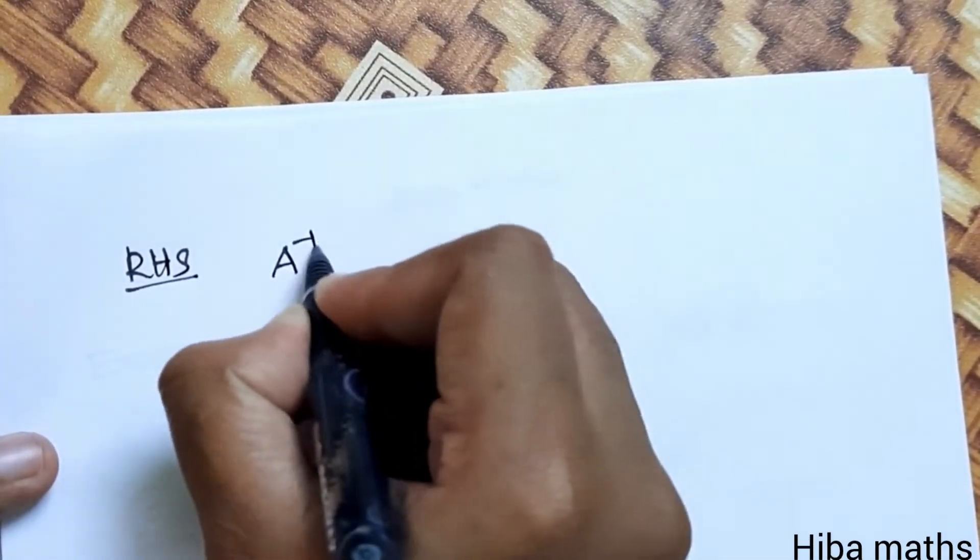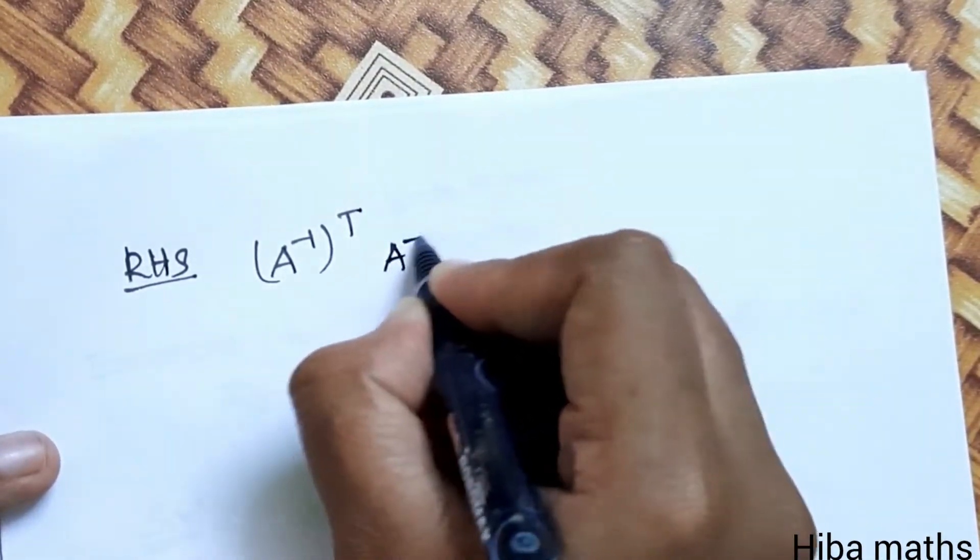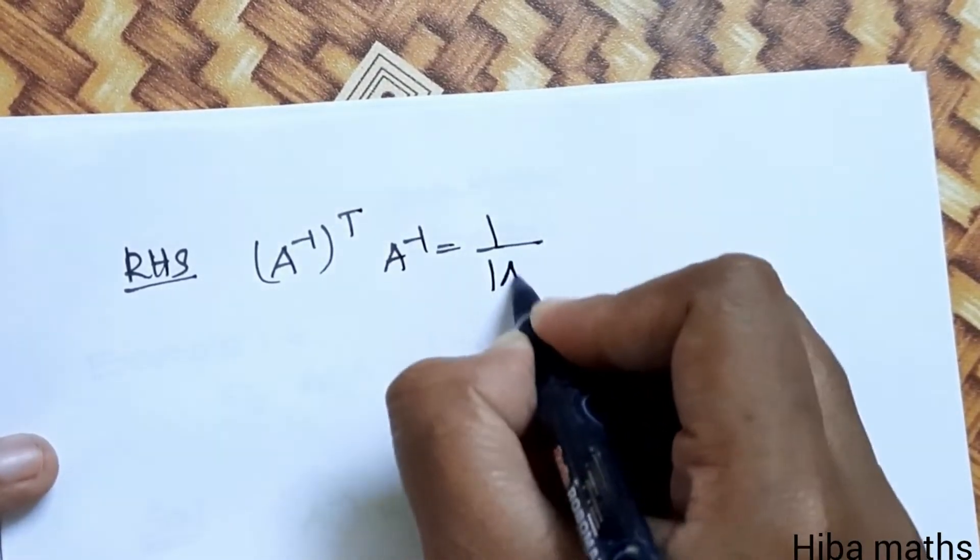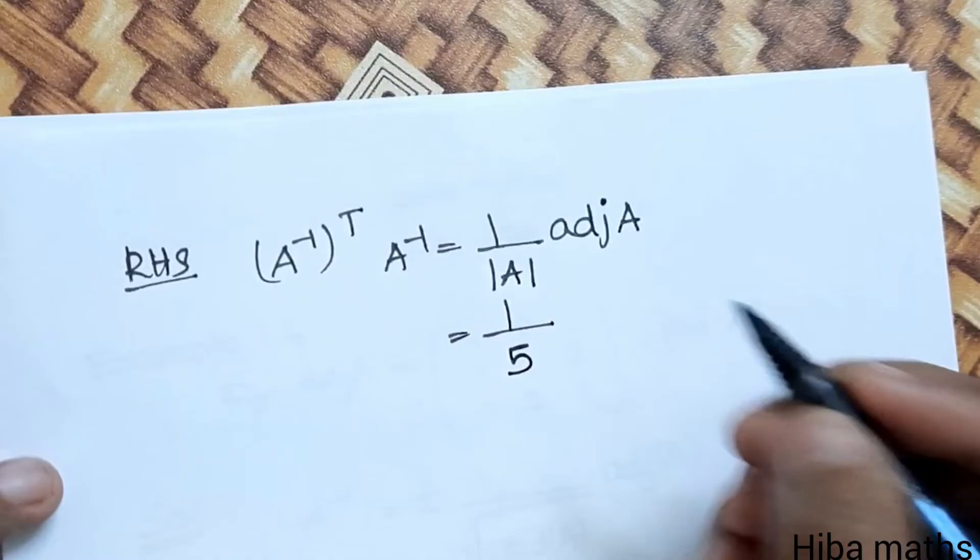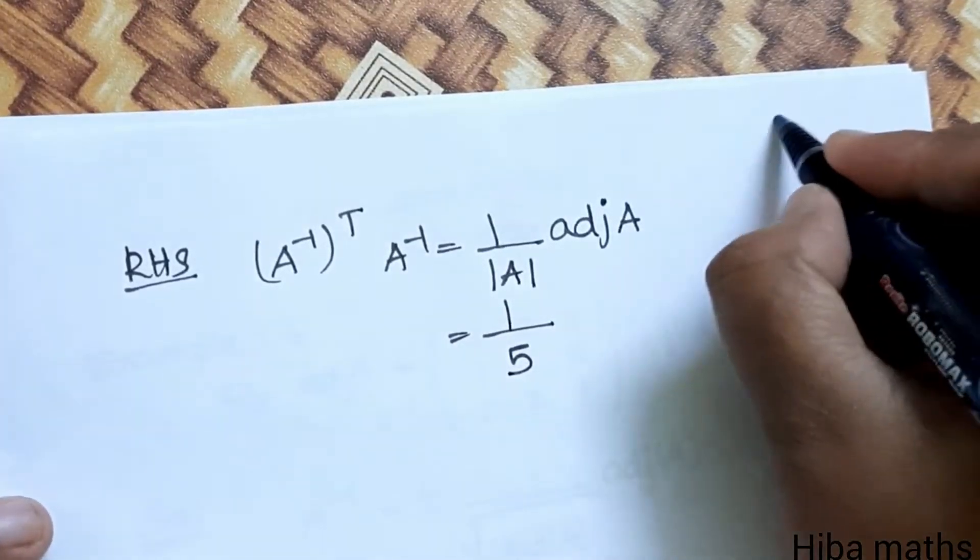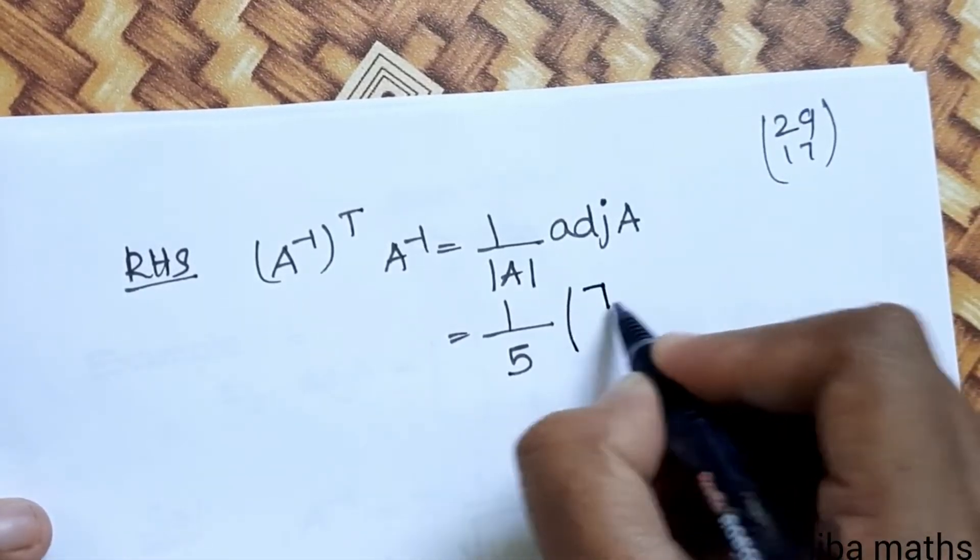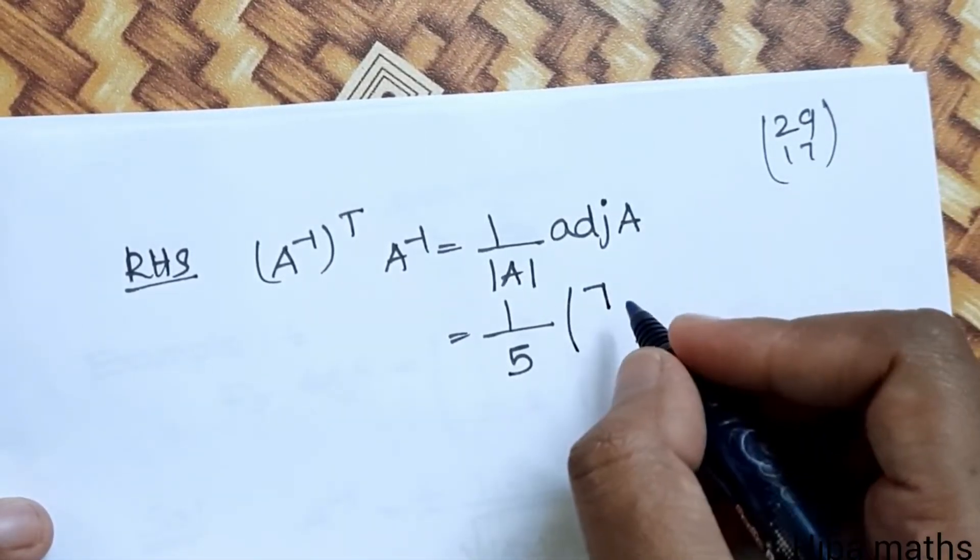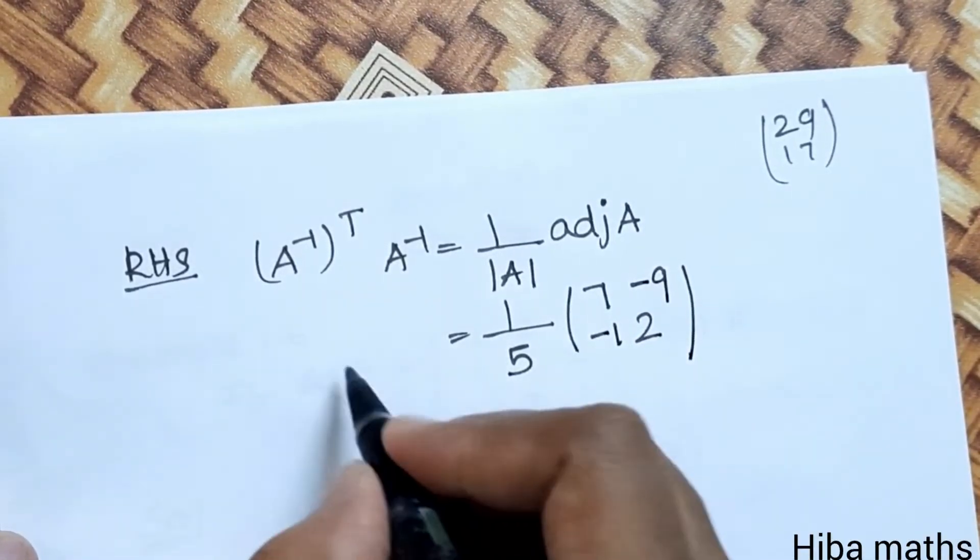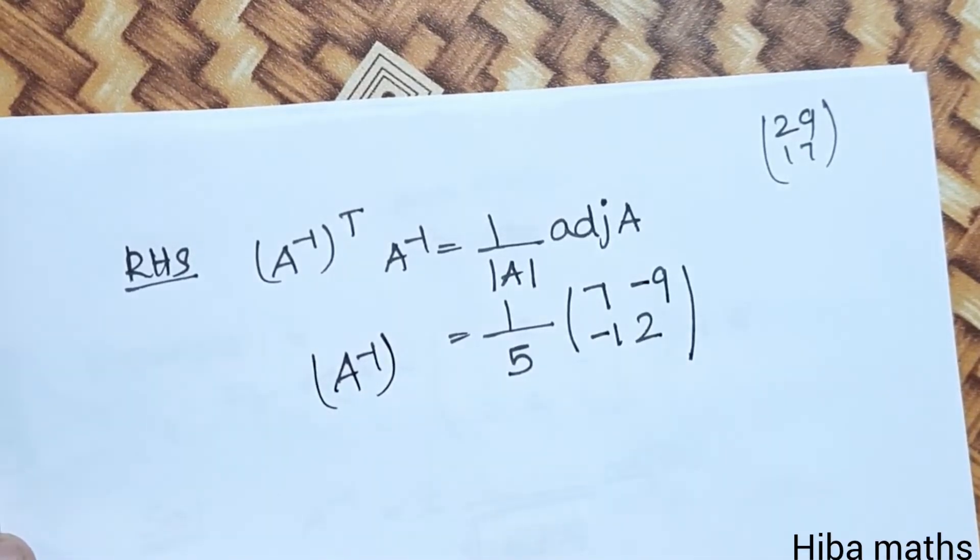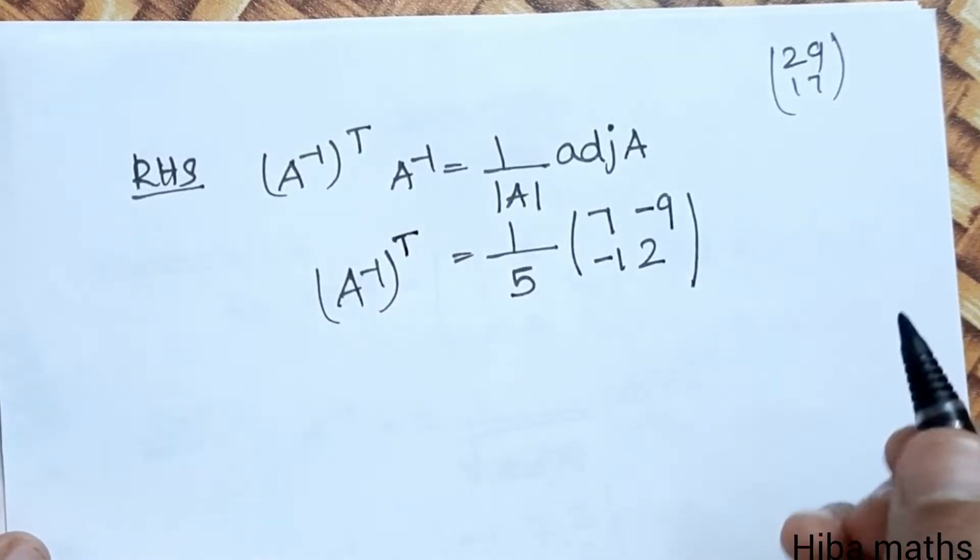RHS is A inverse transpose. So if you choose A inverse, how do you choose A inverse? 1 by modulus of A into adjoint of A. Modulus of A is equal to 5. Now adjoint of A. Interchange 7, 2. The 1, 9 becomes minus 1, minus 9. So this is A inverse. And the question is A inverse transpose.